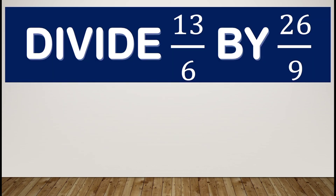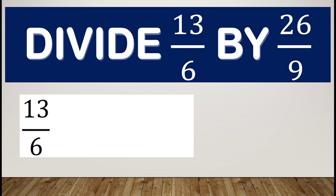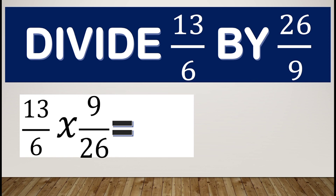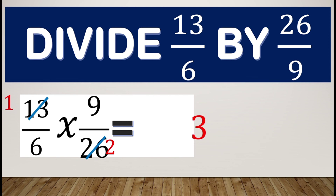Using the alternative method for thirteen over six divided by twenty-six over nine: the reciprocal of twenty-six over nine is nine over twenty-six, giving us thirteen over six times nine over twenty-six. Thirteen and twenty-six are divisible by thirteen — thirteen divided by thirteen is one, twenty-six divided by thirteen is two. Nine and six are divisible by three — nine divided by three is three, six divided by three is two. Our new equation is one-half times three-halves, and the result is three-fourths.